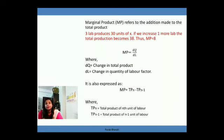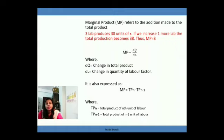Marginal product refers to the addition made to the total product. Whenever we use the term 'marginal' in economics we always use it in the sense of addition. Marginal cost is additional cost; marginal product is additional product — specifically, the addition made to total product due to employing one additional unit of a factor. For example, three laborers produce 30 units; if we add one more laborer and total production becomes 38, then the addition made is 8, so marginal product is 8. Mathematically, MP = ΔQ / ΔL, that is change in Q divided by change in L.